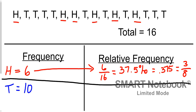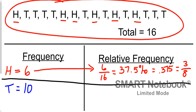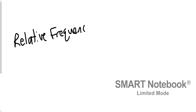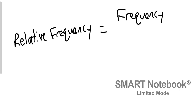Relative frequency is turning these numbers into percentages: it's always the frequency over the total. On a calculator, 6 over 16 comes out to 37.5%, or as a decimal 0.375, or as a simplified fraction 3 over 8. So that's the difference. The frequency of landing on heads was 6; the relative frequency was 37.5%. For tails, it's 10 over 16, which is 62.5%, or 0.625, or 5 over 8. You can always think of frequency as just counting, and relative frequency is always frequency over total.